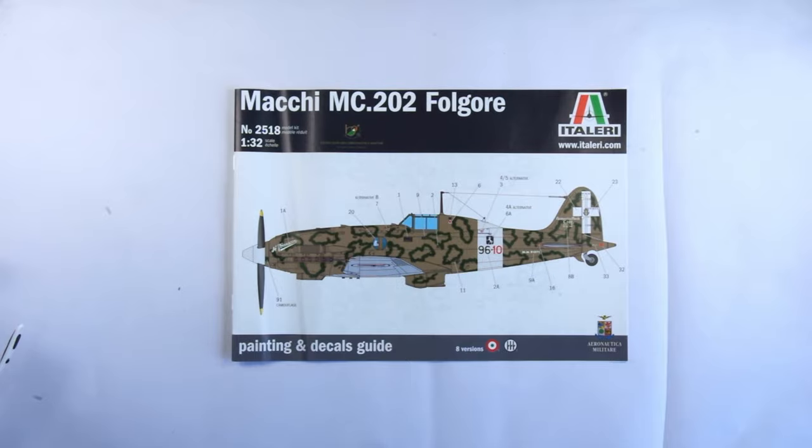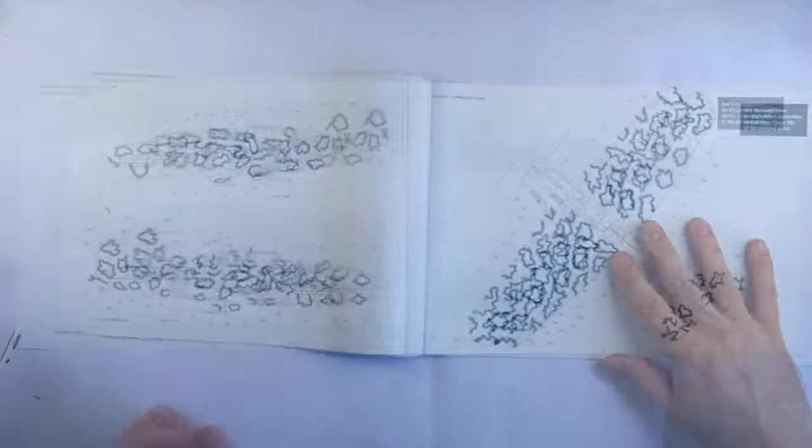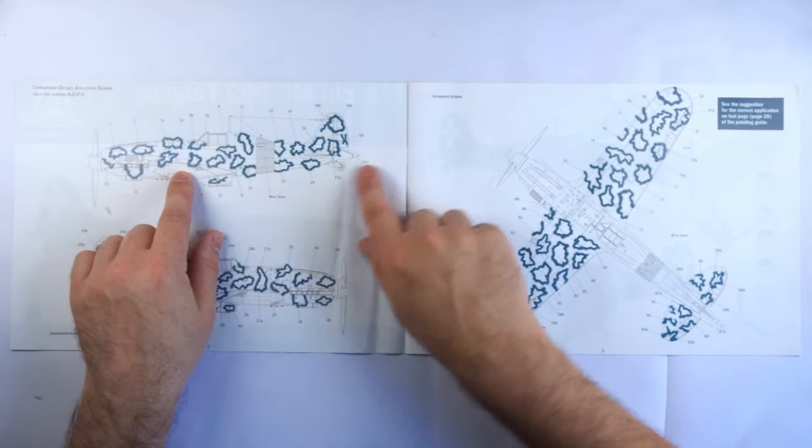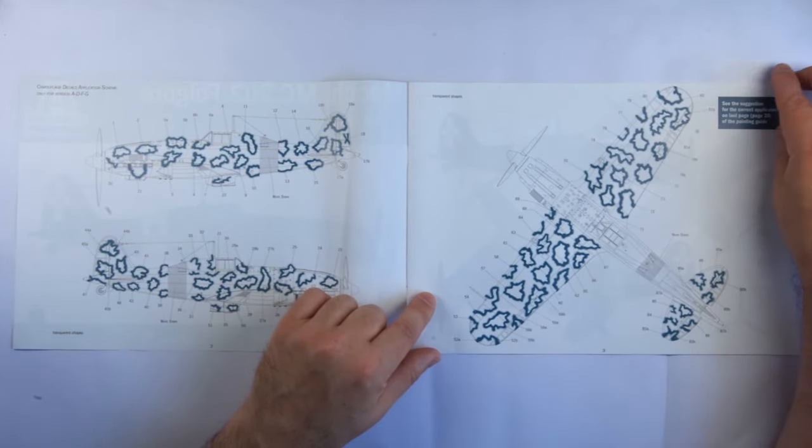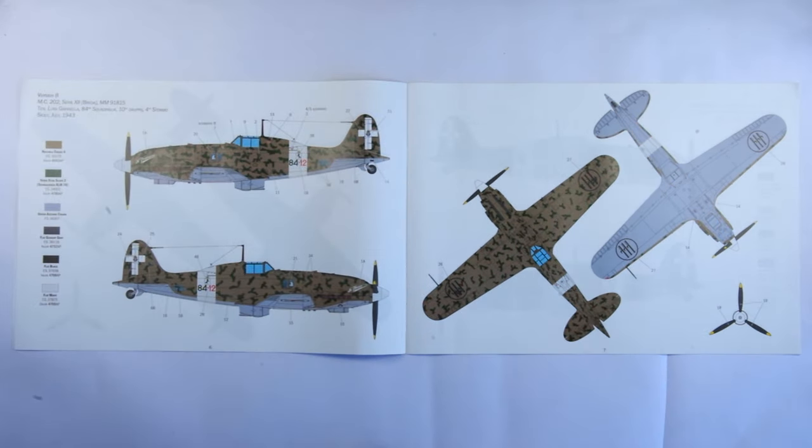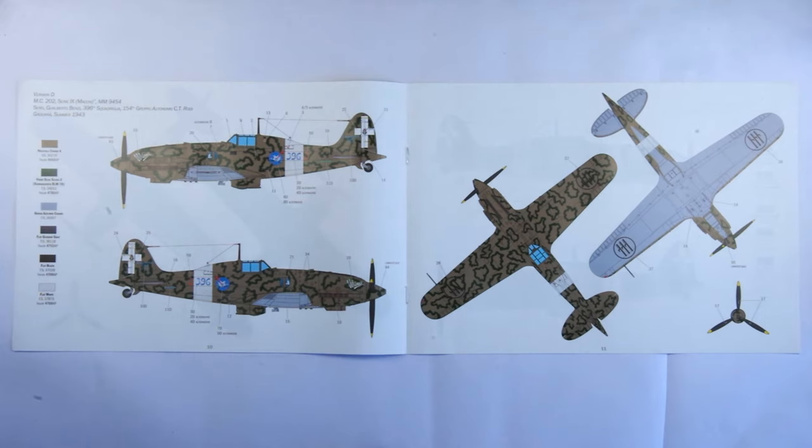The painting and decal guide booklet is really very nice here. First off, we have a three view of the aircraft showing the positioning of all of the smoke ring camouflage decals. More on those later. We then go through the color and decal guides for each of the eight schemes provided. Each of the aircraft is displayed over a full double page spread, in color, with four view format, making the markings completely unambiguous.